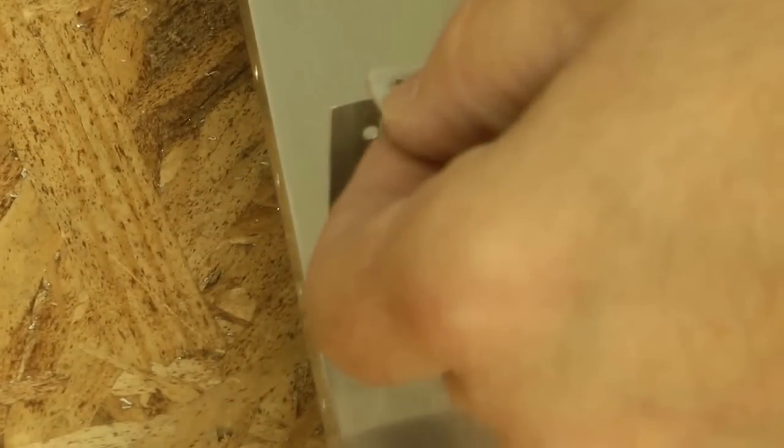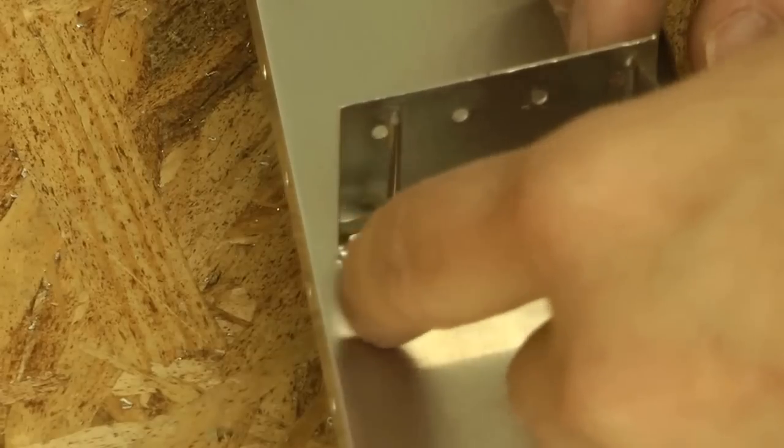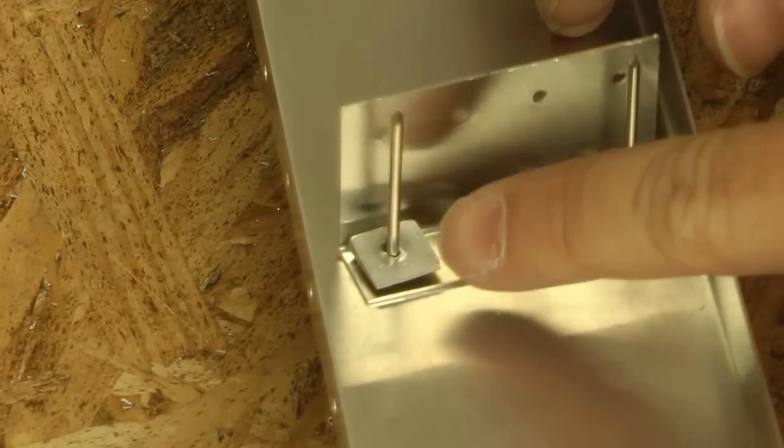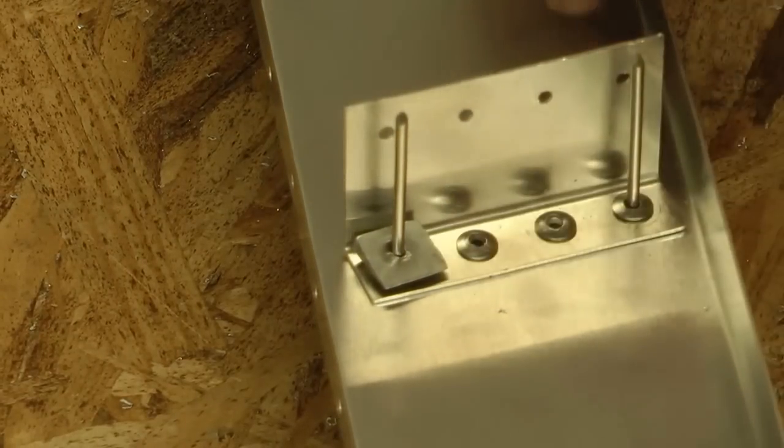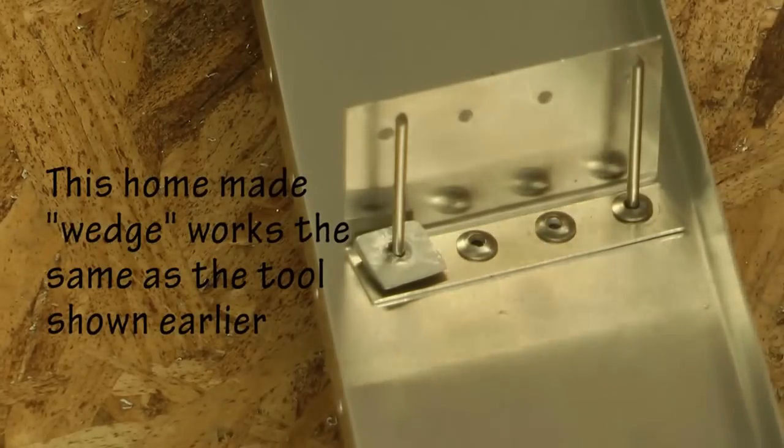I'll place the wedge over the rivet stem and this will allow us to rivet at a slight angle and yet keep the rivet head flat against our work.